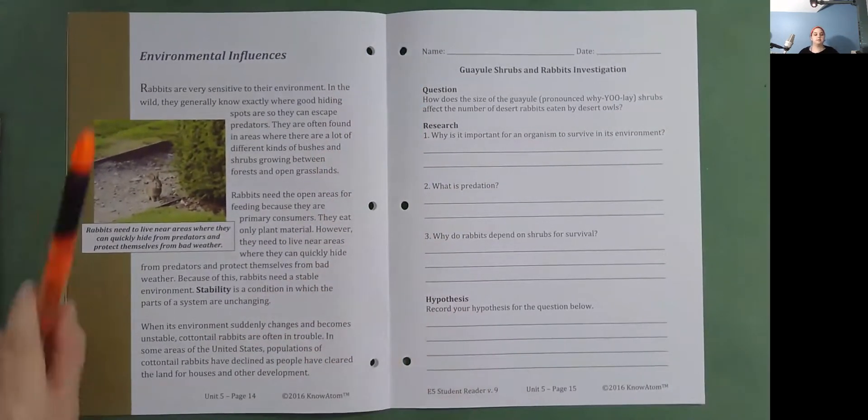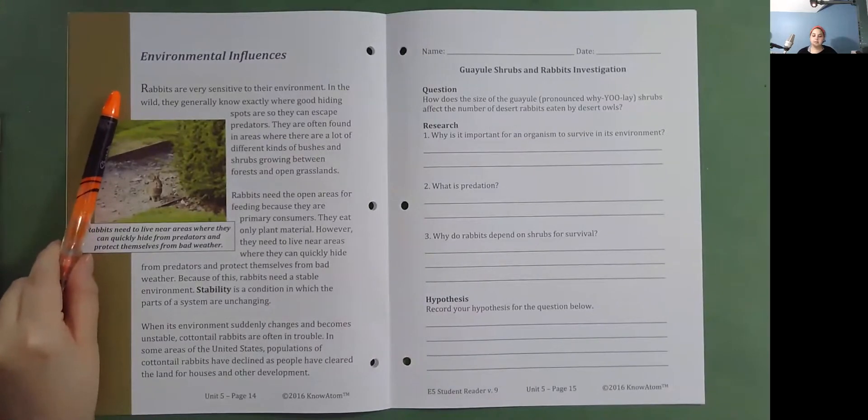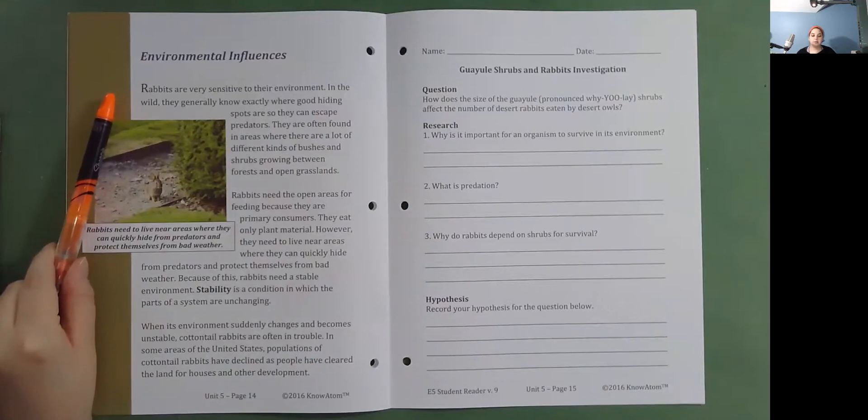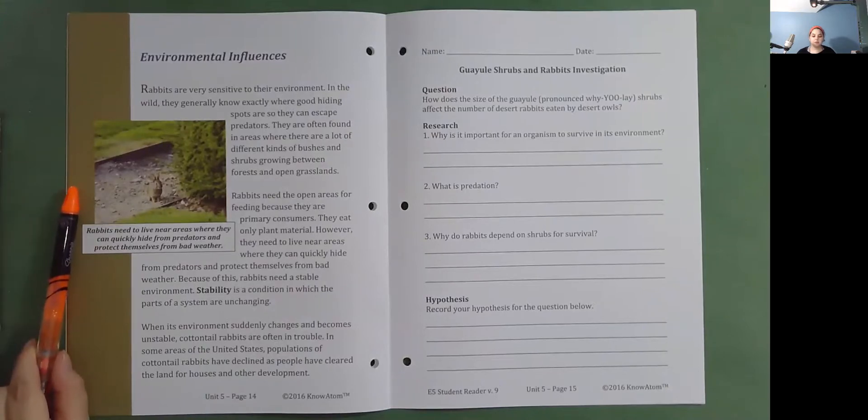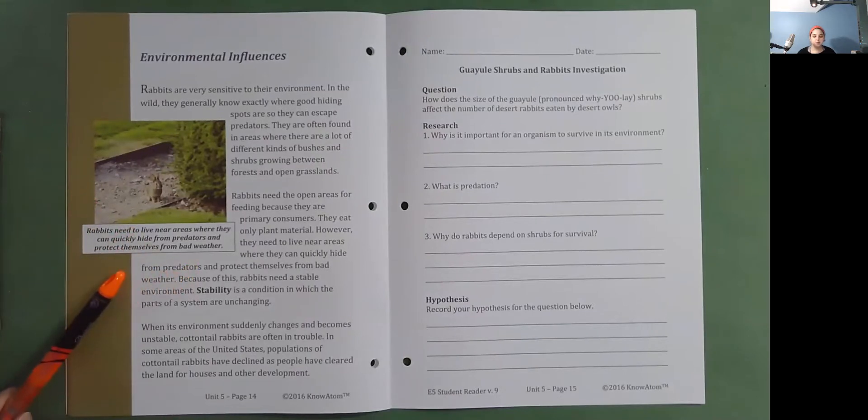Environmental Influences. Rabbits are very sensitive to their environment. In the wild, they generally know exactly where good hiding spots are so they can escape predators. They are often found in areas where there are a lot of different kinds of bushes and shrubs growing between forests and open grasslands. Rabbits need the open areas for feeding because they are primary consumers. They eat only plant material. However, they need to live near areas where they can quickly hide from predators and protect themselves from bad weather.